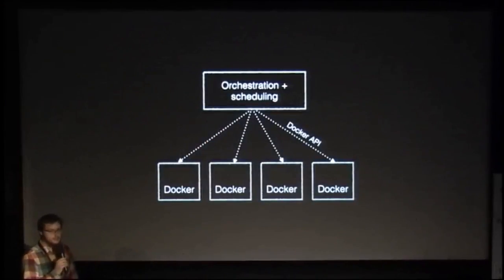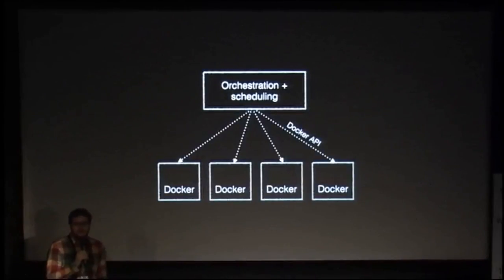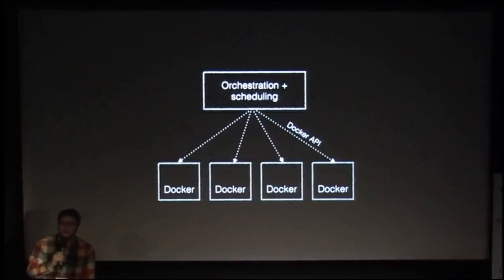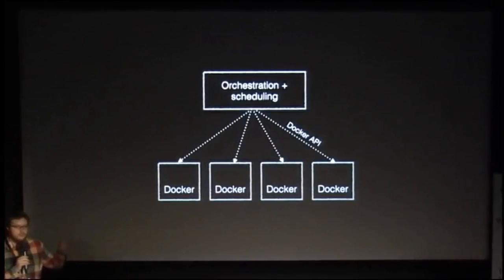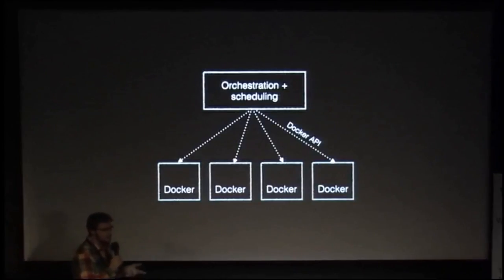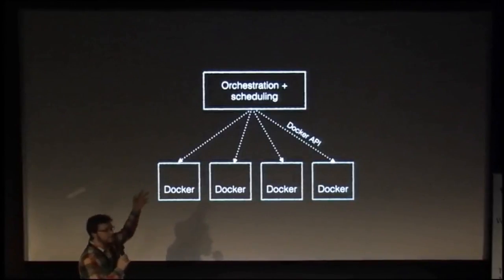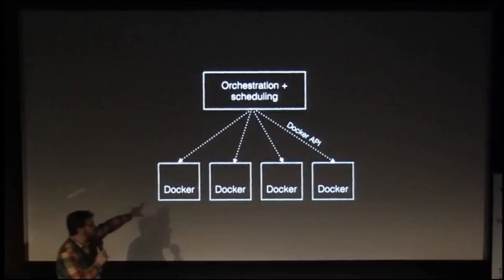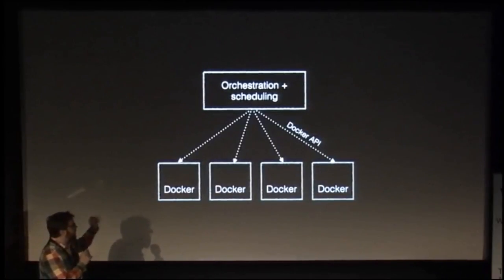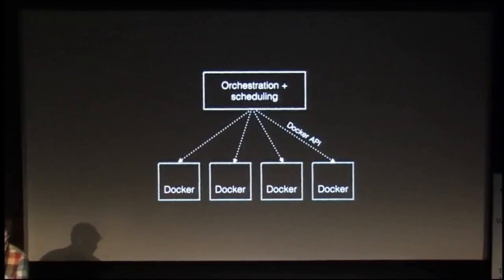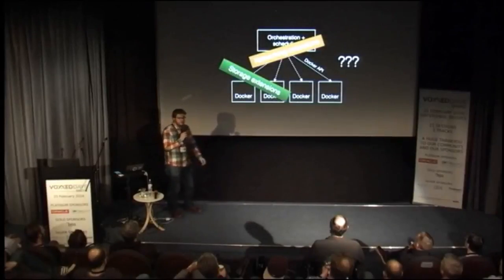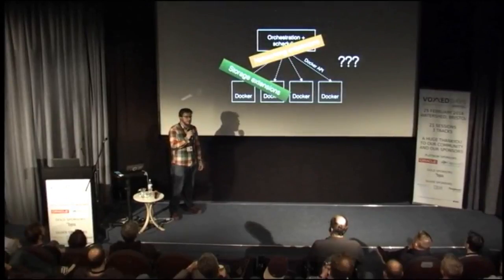The problem was that there wasn't really anywhere in the stack for the thing we wanted to build to fit. If you look at a typical container stack, this is something like what Docker Swarm would look like running against a set of container hosts. At the top you've got something that does orchestration and scheduling — Docker Swarm with Compose, or Kubernetes, or Mesosphere with Marathon. In abstract, there's something that controls a set of hosts where you have the Docker daemon running, and the Docker daemon is where you actually run your workloads.